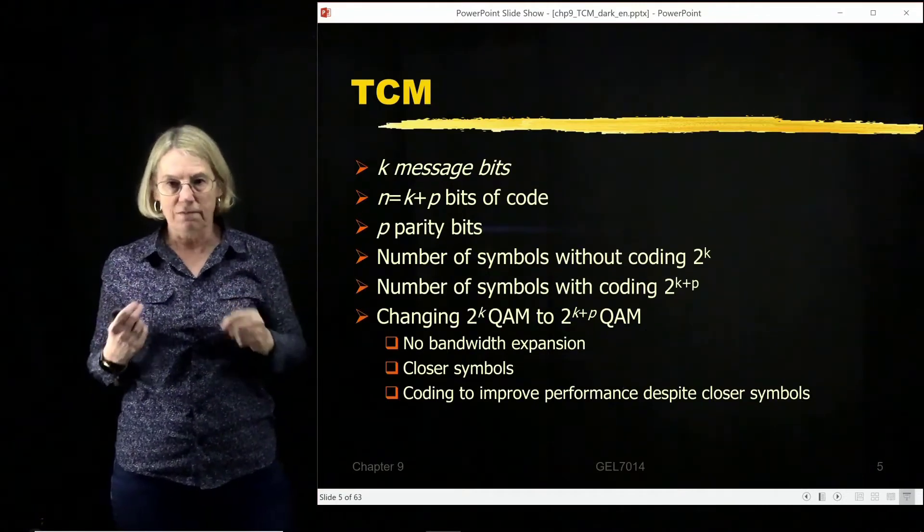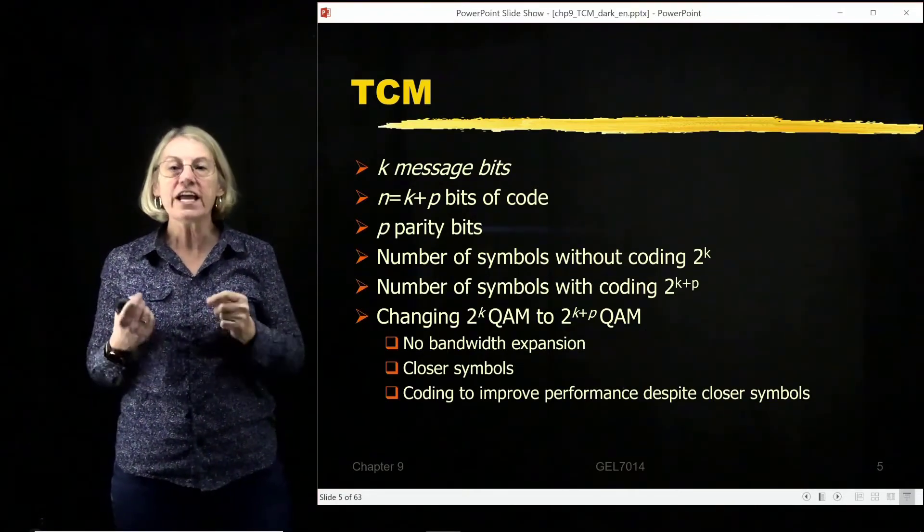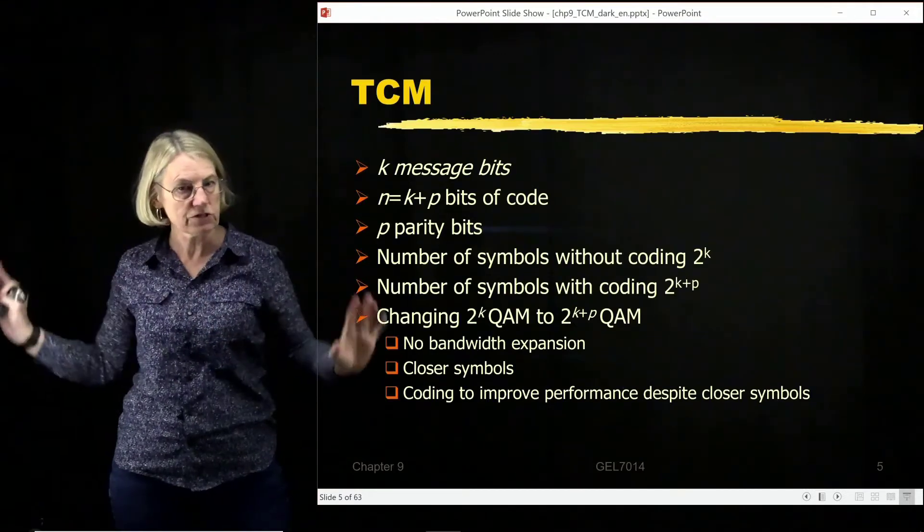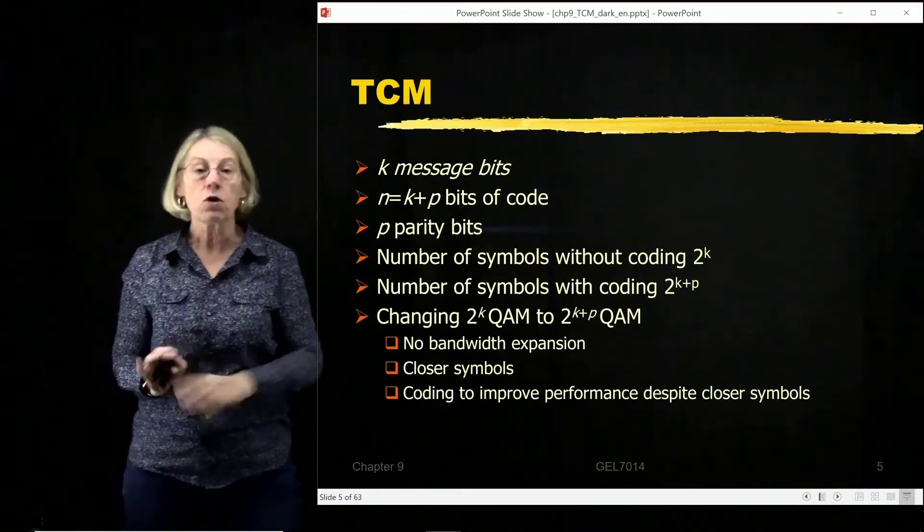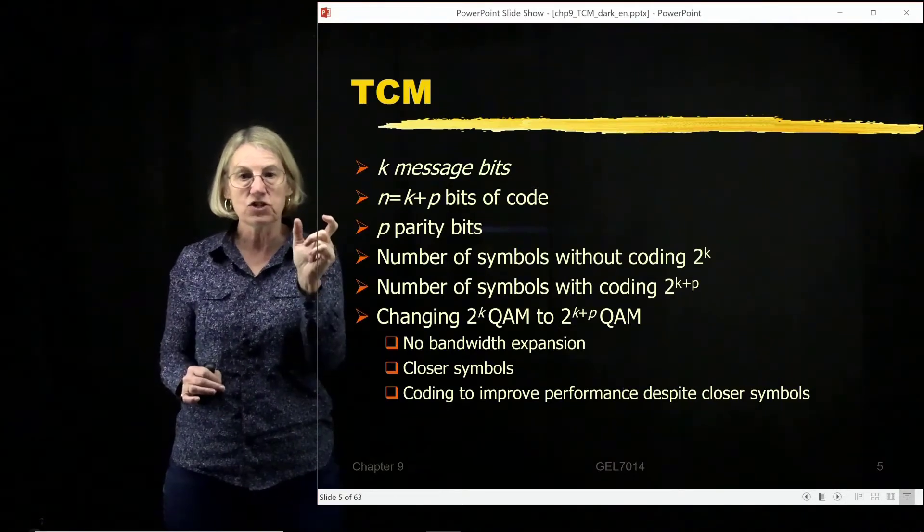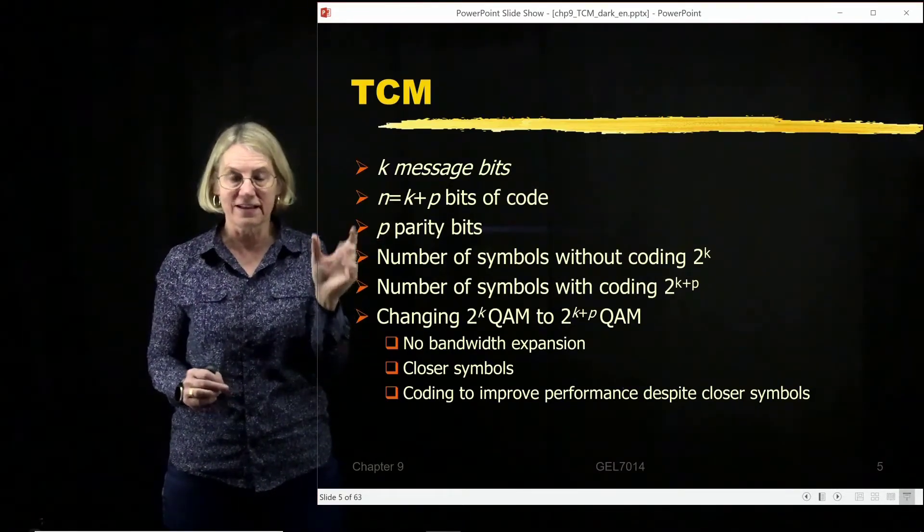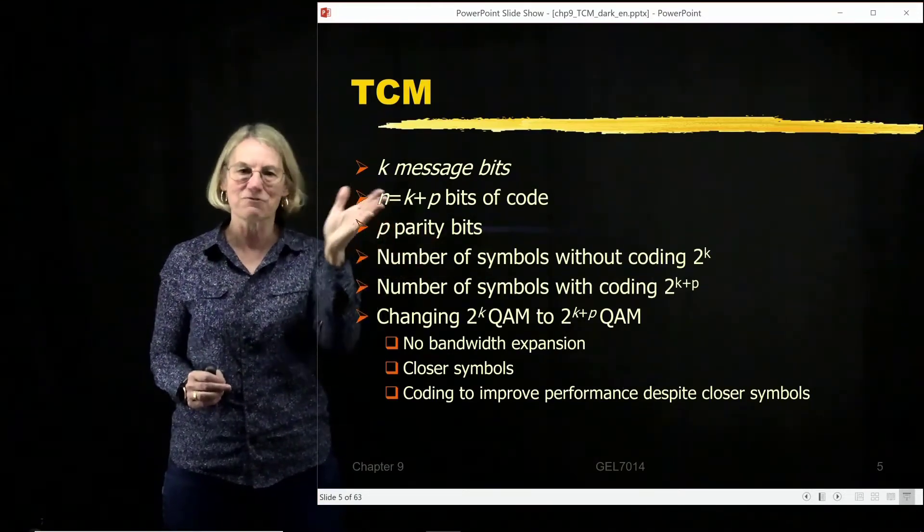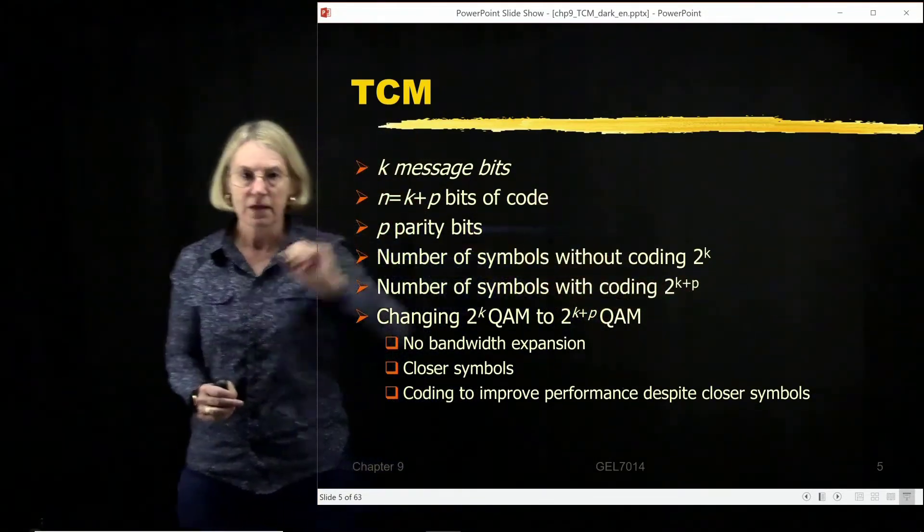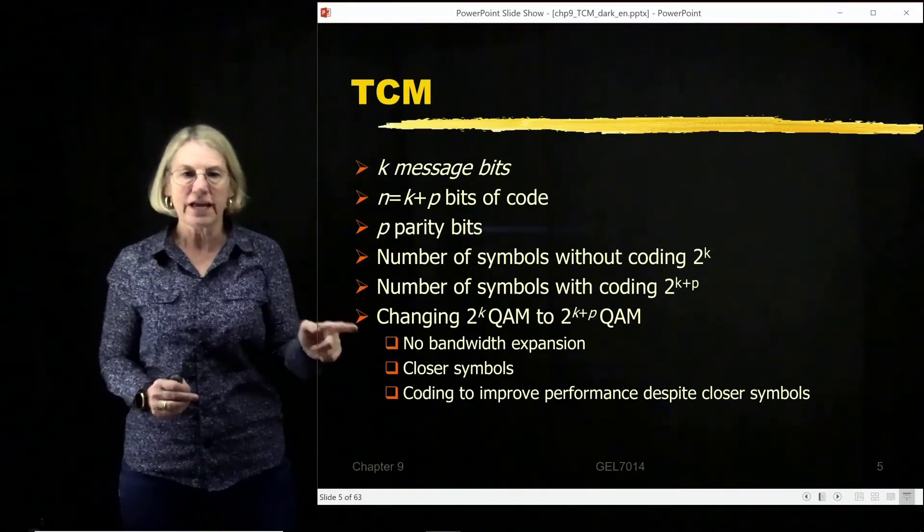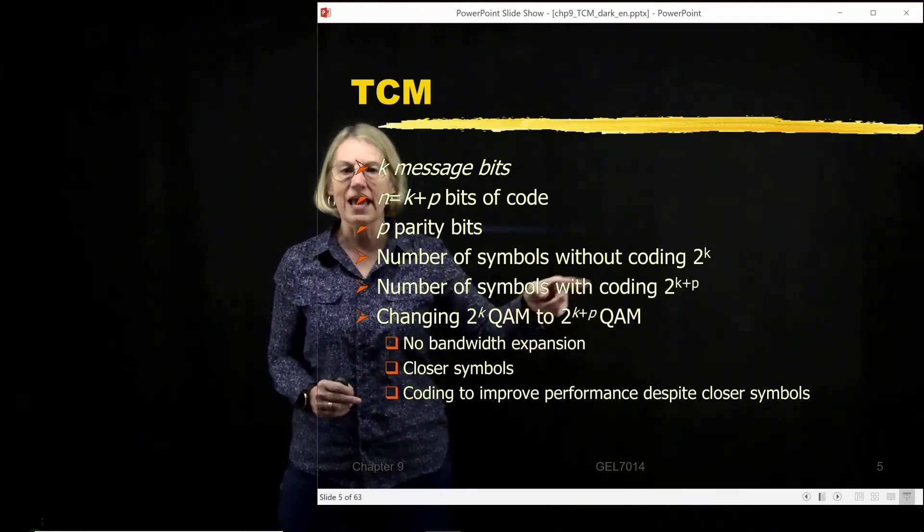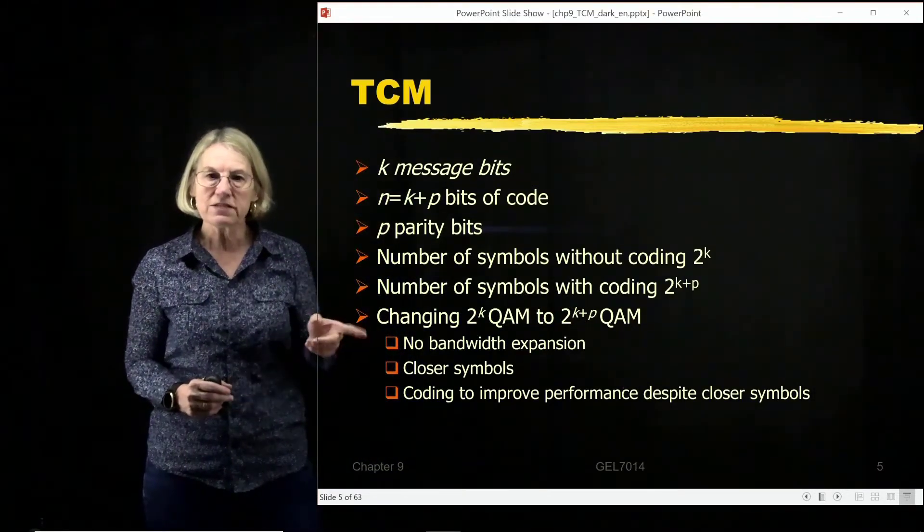Now what I do for trellis coded modulation is I change the modulation depending on how much redundancy I give to my code. Before, there were 2 separate steps, now they're being handled together. So if I have P parity bits that I've added and I want to take that new block which is now size N and I want to do a modulation with that message bit sequence or message for transmission, now I have to come up with a different modulation, a different constellation, a larger constellation. So basically what we're doing with trellis coded modulation is taking a basic 2 to the K QAM modulation and instead doing a modulation of 2 to the K plus P QAM.